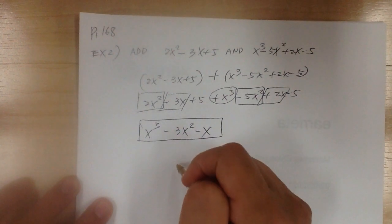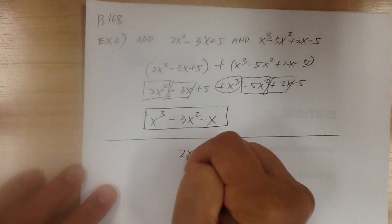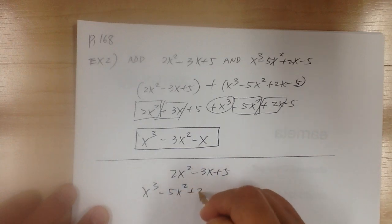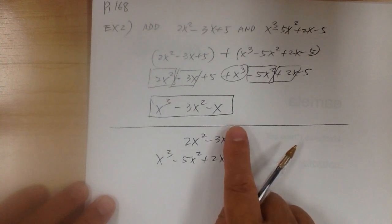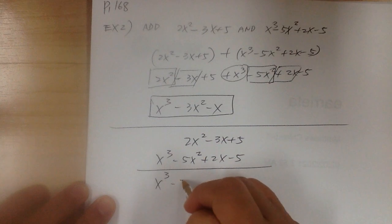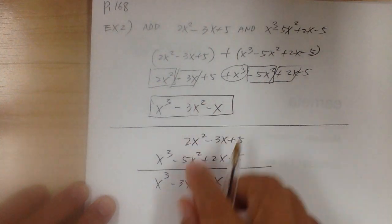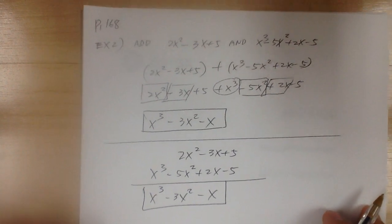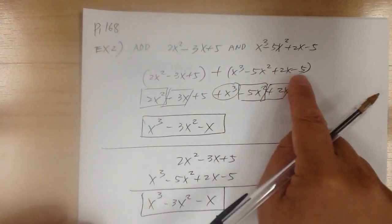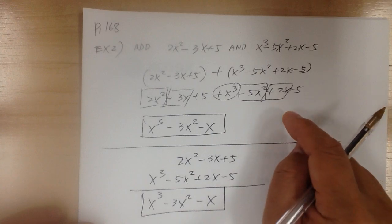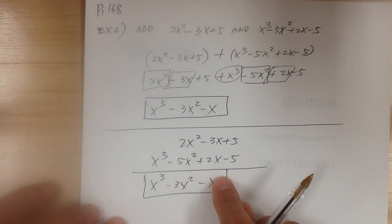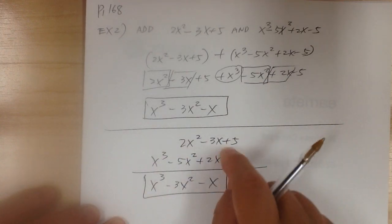When you do it vertically, arrange the terms in order and line everything up. You have 2x squared minus 3x plus 5, and x cubed minus 5x squared plus 2x minus 5. If there's a missing term, just leave a blank space. When you add, you get x cubed, minus 3x squared, minus x, and the constants cancel out — the same answer. The advantage of horizontal is you don't have to rearrange terms. The advantage of vertical is it's clearer and easier to add when everything is lined up.